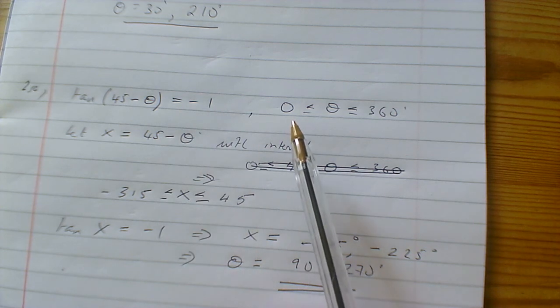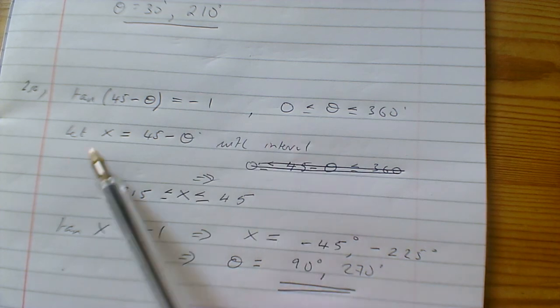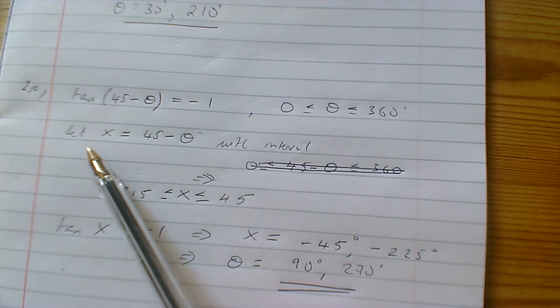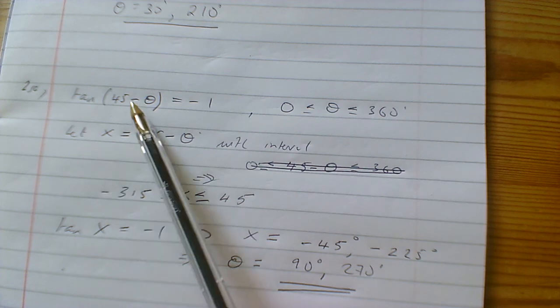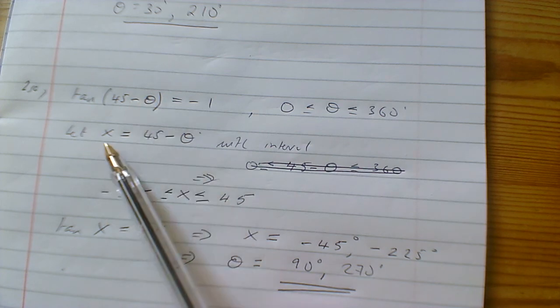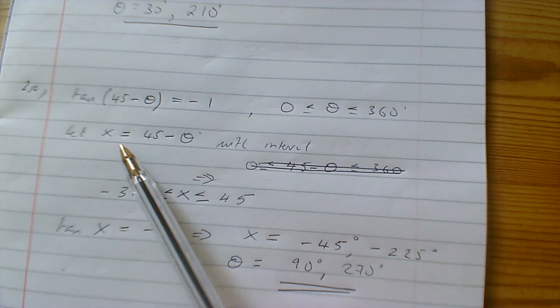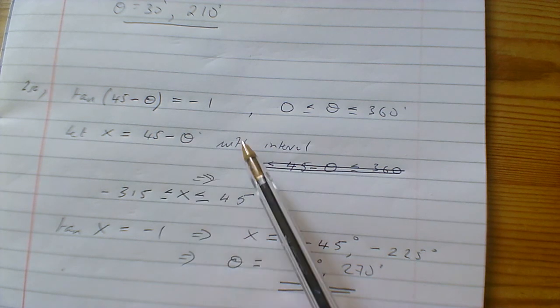The method used in the book is quite good. To make things easier, we use a substitution: let X = 45 - θ. Then we adjust the interval for this new variable X.